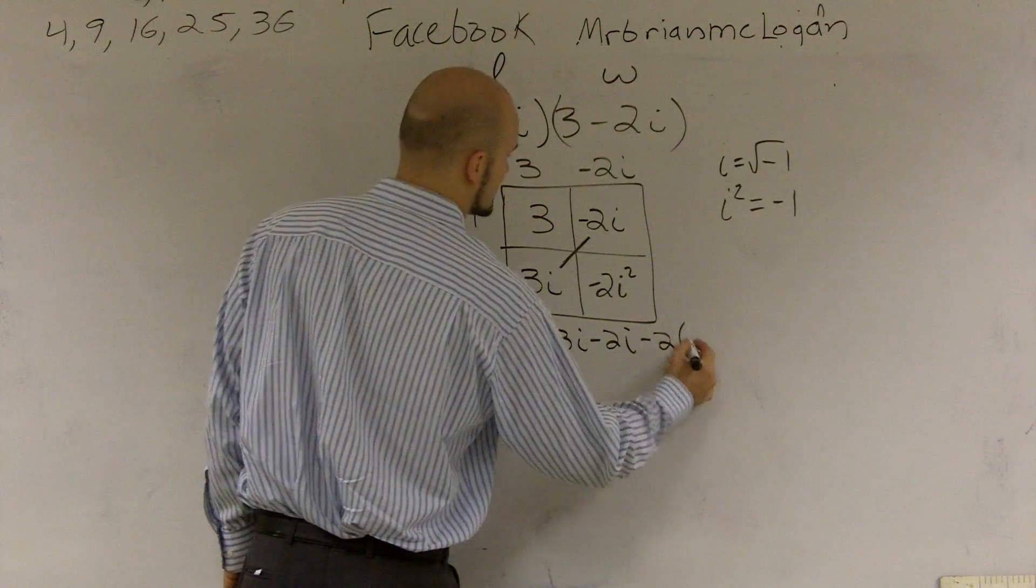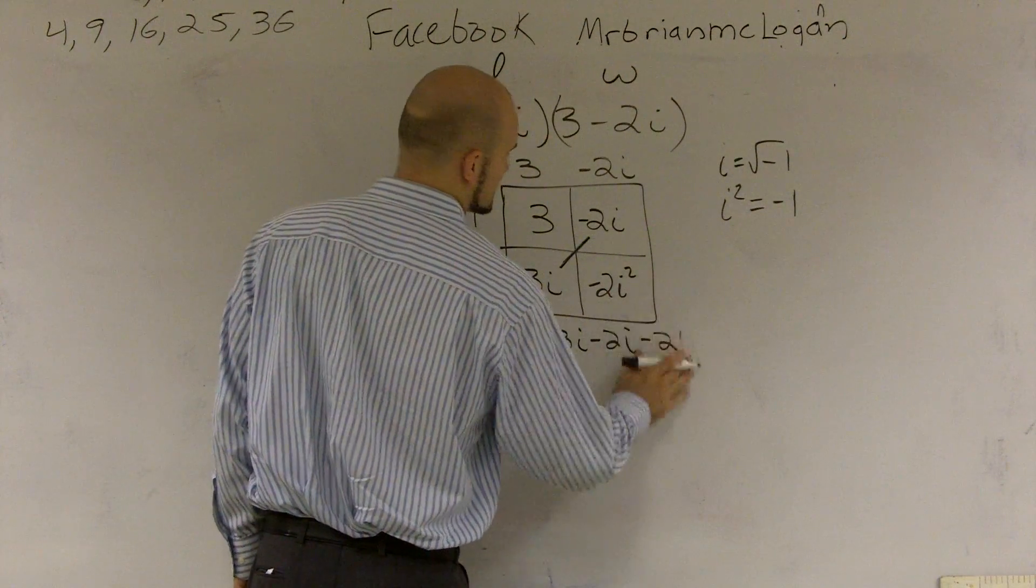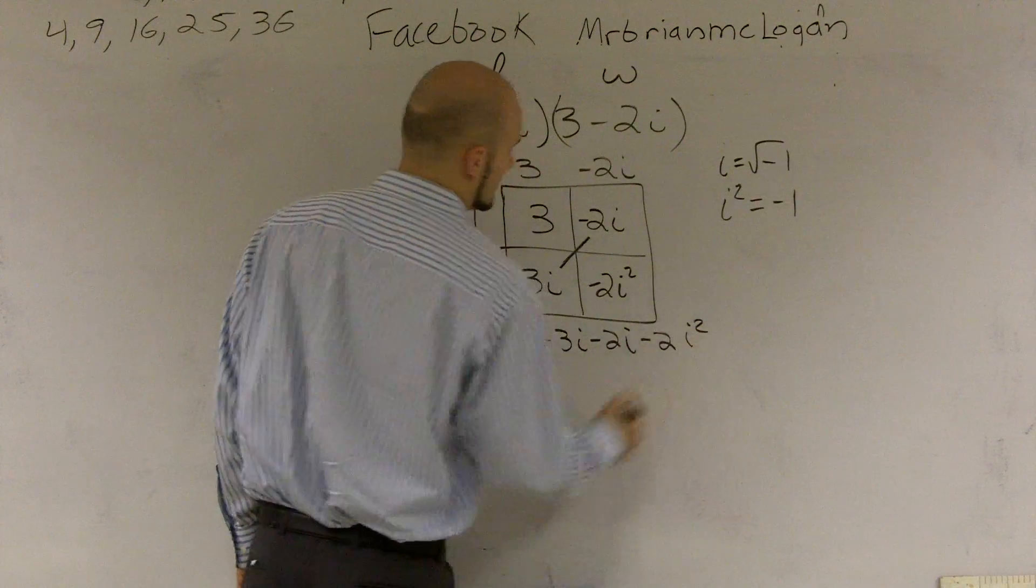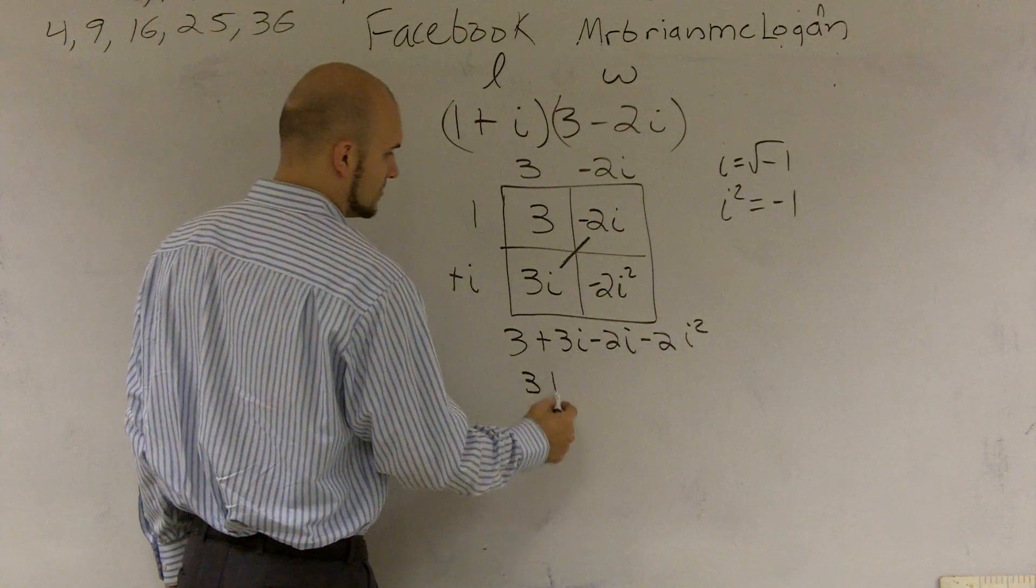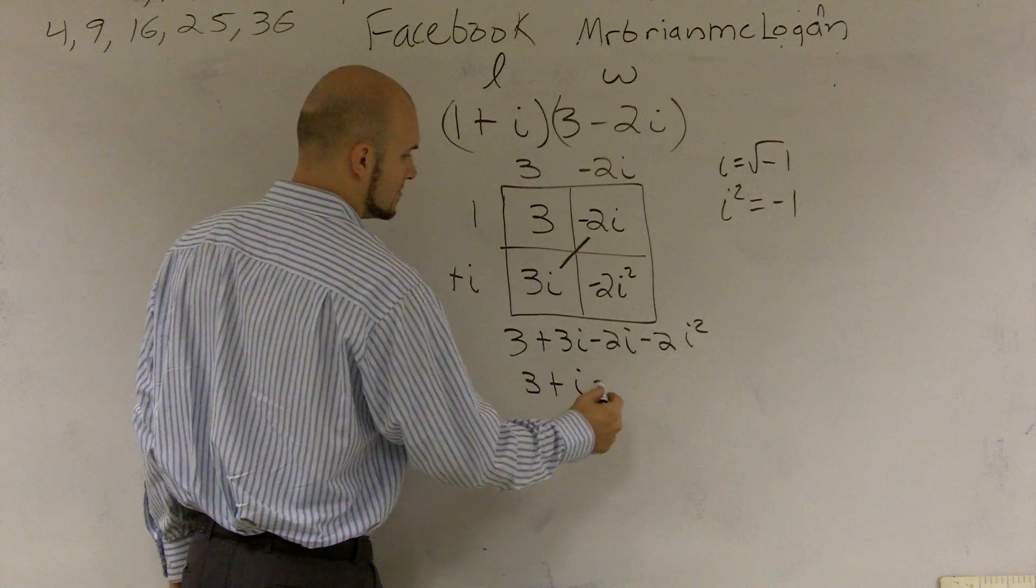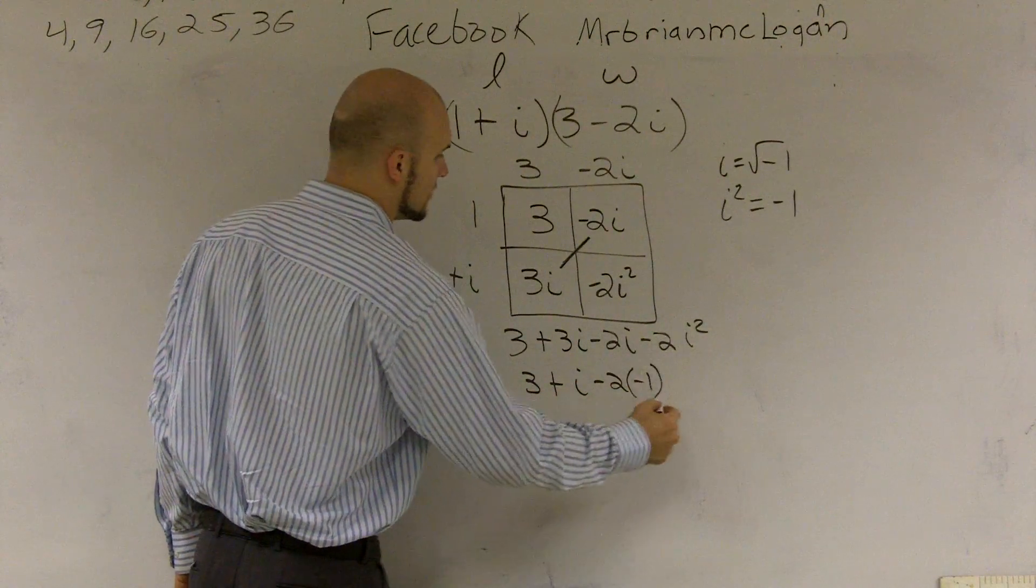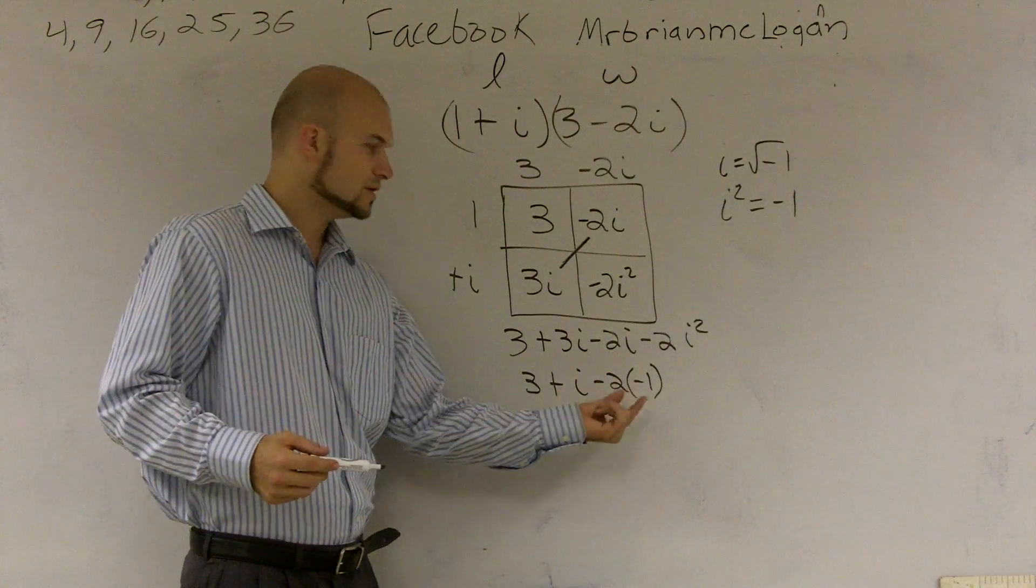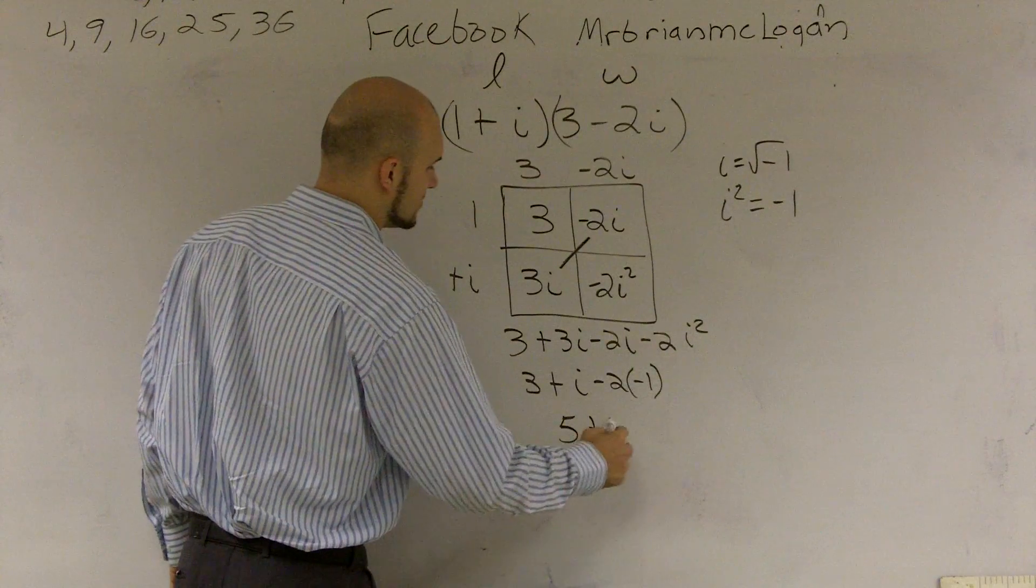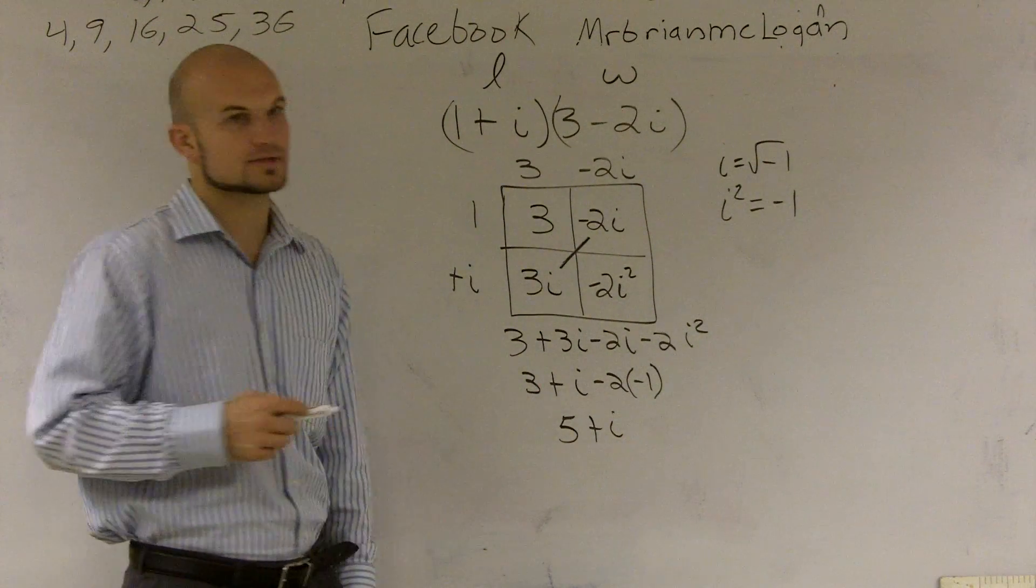3 plus 3i, minus 2i, minus 2, and I'll just write i squared. This now becomes negative 1. I can combine these. So 3 plus i, minus 2 times negative 1. Well, obviously the negative 1 and the negative 2 is going to be a positive 2. 2 plus 3 is 5, so it's 5 plus i is your final answer.